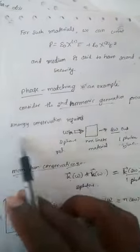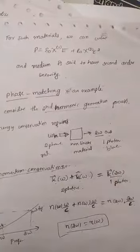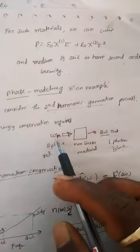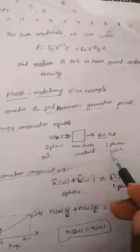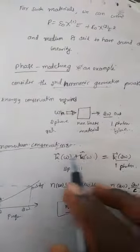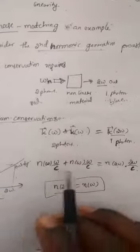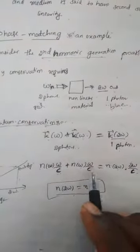Next we go to phase matching in second harmonic generation. Consider the process: energy conservation requires that two photons each of frequency ω combine in a nonlinear material to produce one photon of frequency 2ω. For conservation of momentum, the two wave vectors k(ω) of the incident photons must equal the wave vector of the output photon at frequency 2ω. This can be written as n(2ω)·2ω/c = 2·n(ω)·ω/c, which reduces to n(2ω) = n(ω).